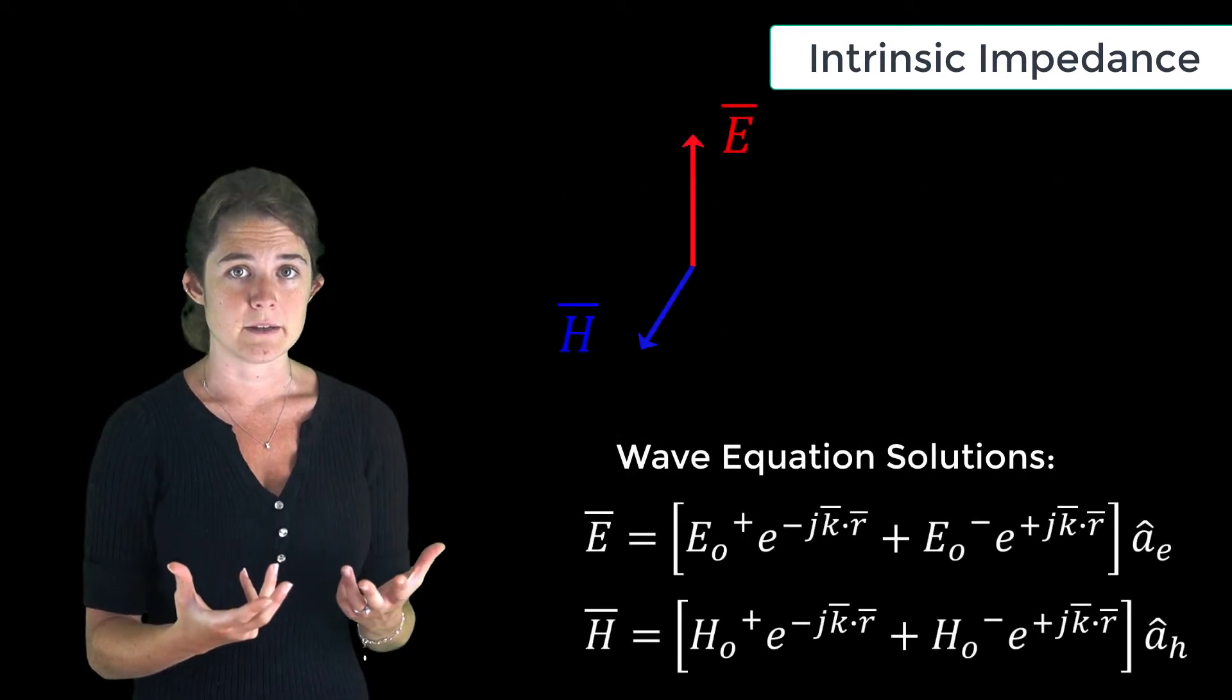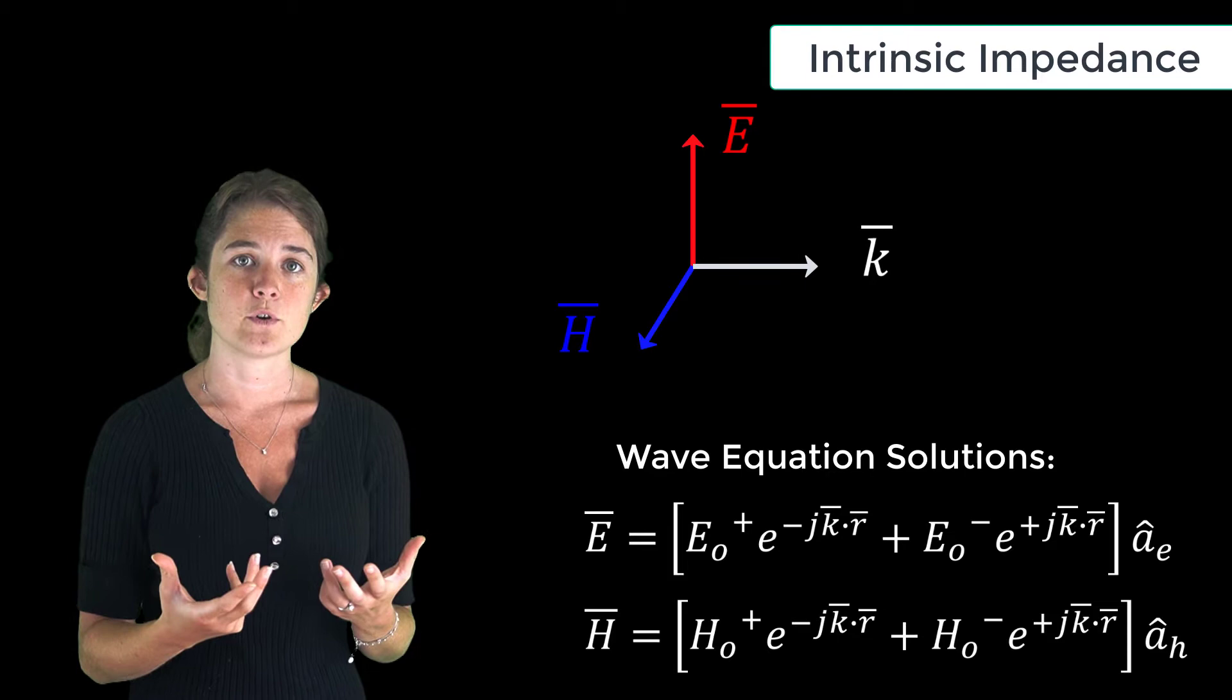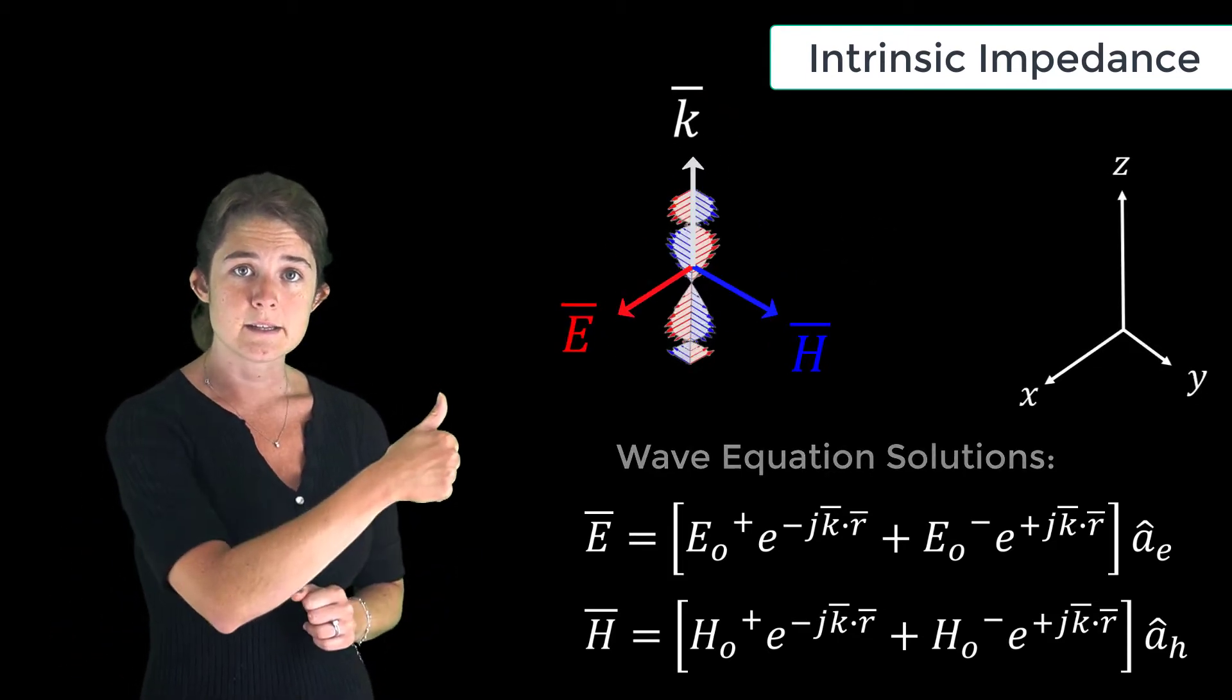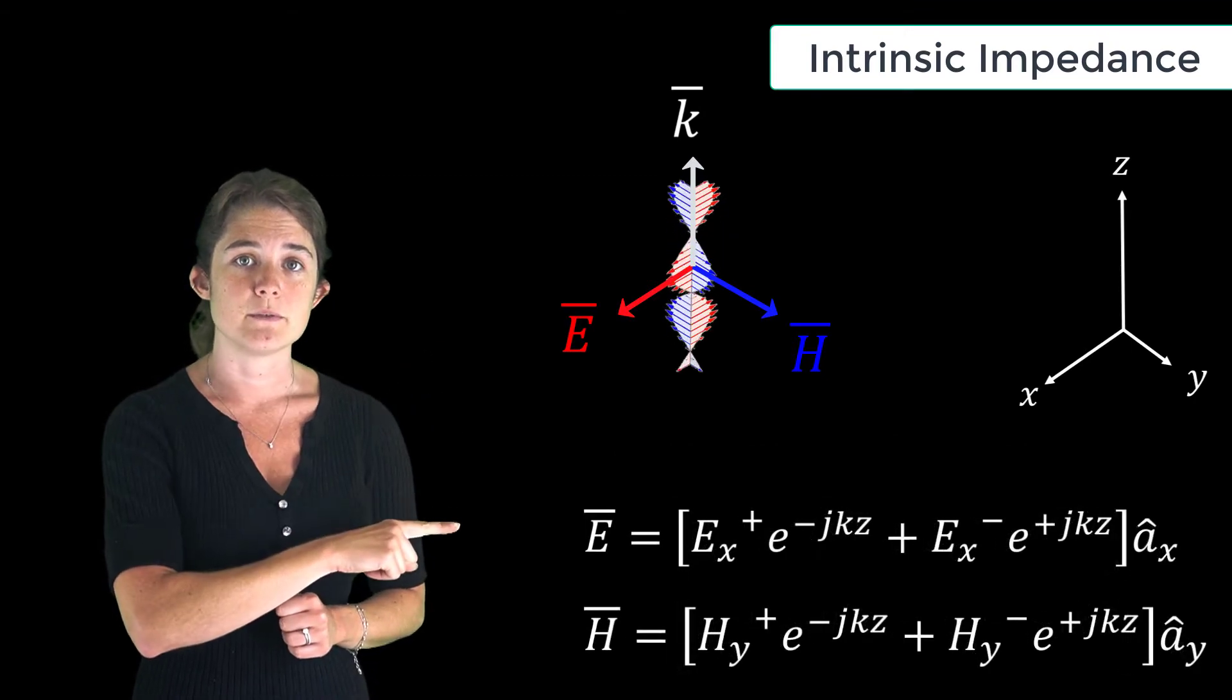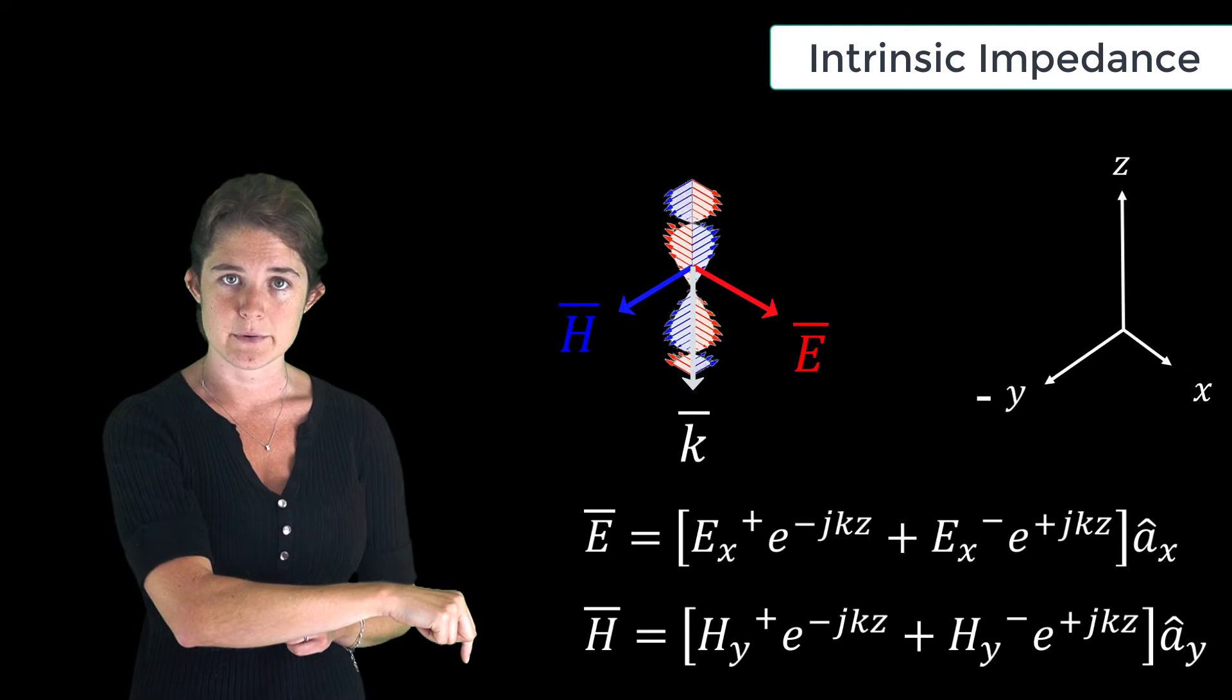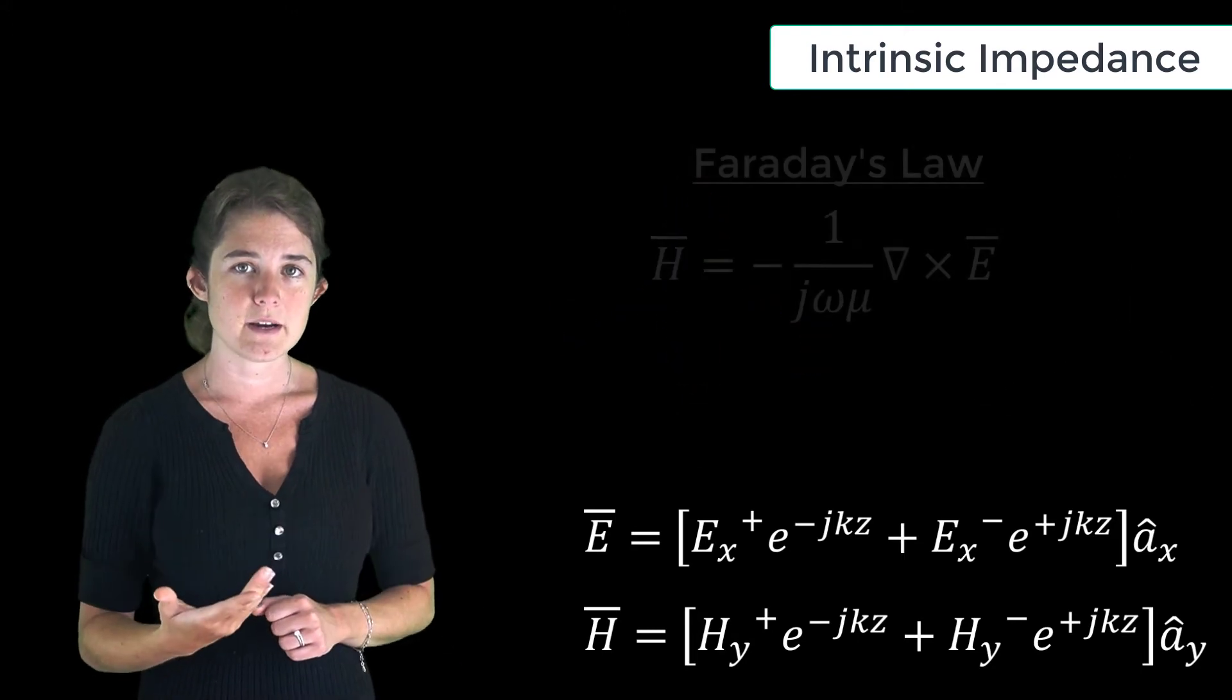So for a plane wave traveling along the z-axis, we have this general solution with both forward propagating components and backward propagating components. If we apply Faraday's law to the electric field equation, we can obtain a second expression for the magnetic field in terms of the electric field.